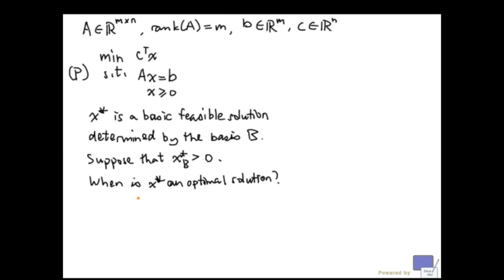Well, we are going to make use of complementary slackness. And for that, let's write down the dual problem. So the dual problem looks like this. It's maximize y transpose b and y transpose times aj is less than equal to cj for all j from 1 up to n. Remember that aj is the jth column of A.